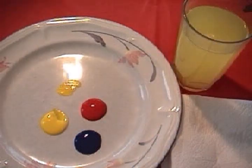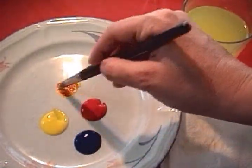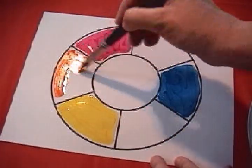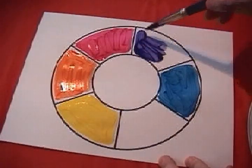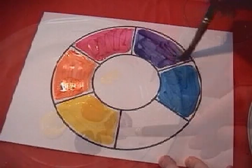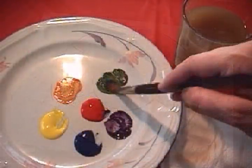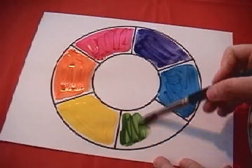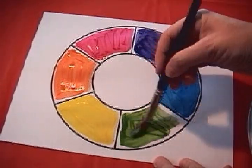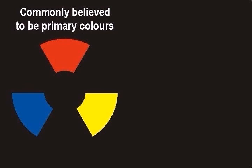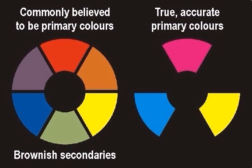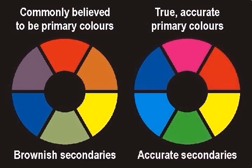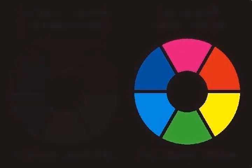Students and teachers often wonder why the secondary colors do not look nice and bright. Even when brushes and equipment have been properly cleaned, the secondary colors often look brownish or dirty. It is because the primary colors that we start with are not truly pure primary colors. Often red, yellow, and blue tempera paint are packaged and sold as primary colors, when in fact they are not truly pure primary colors. This will lead to brownish or dirty looking secondary colors.